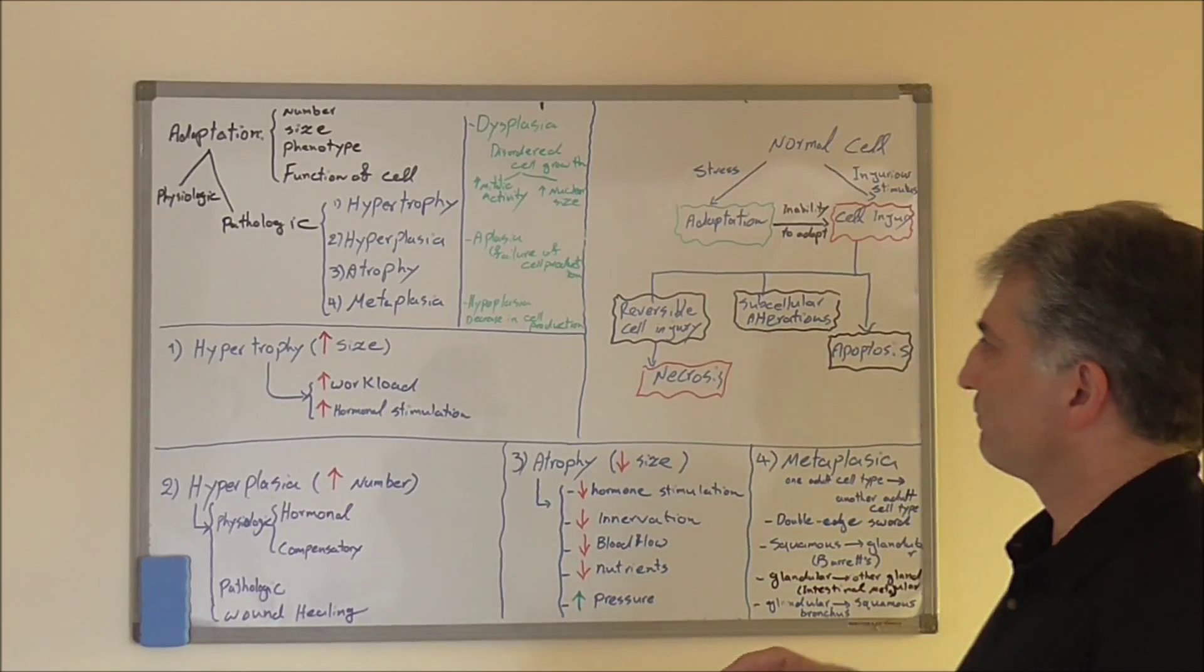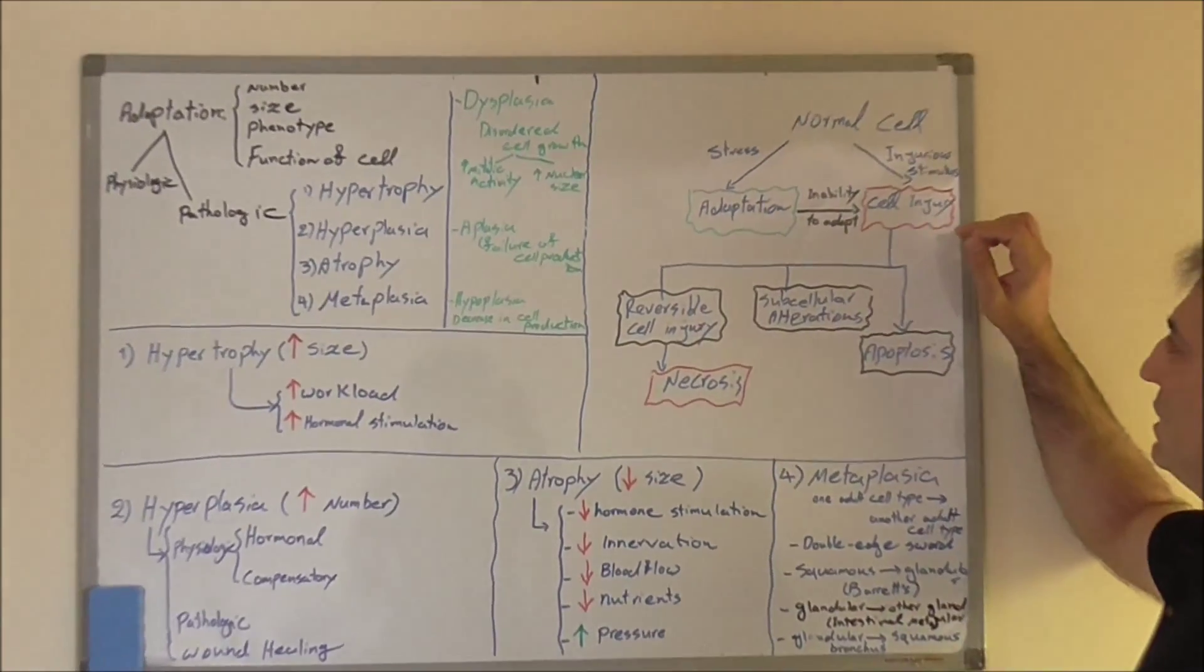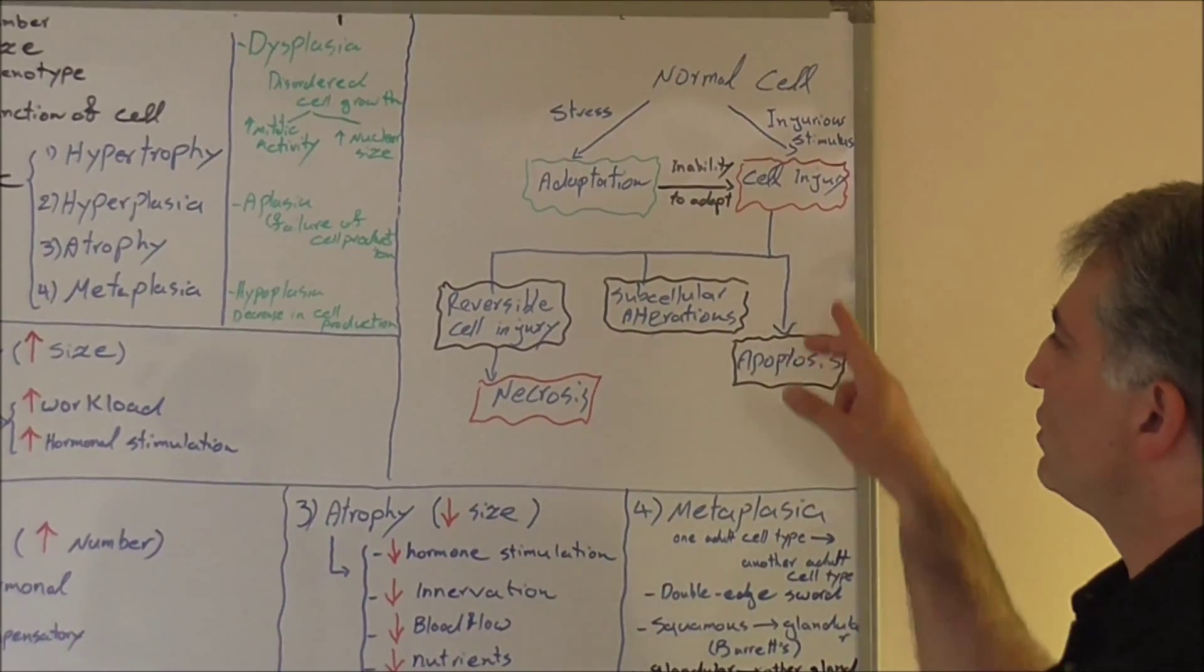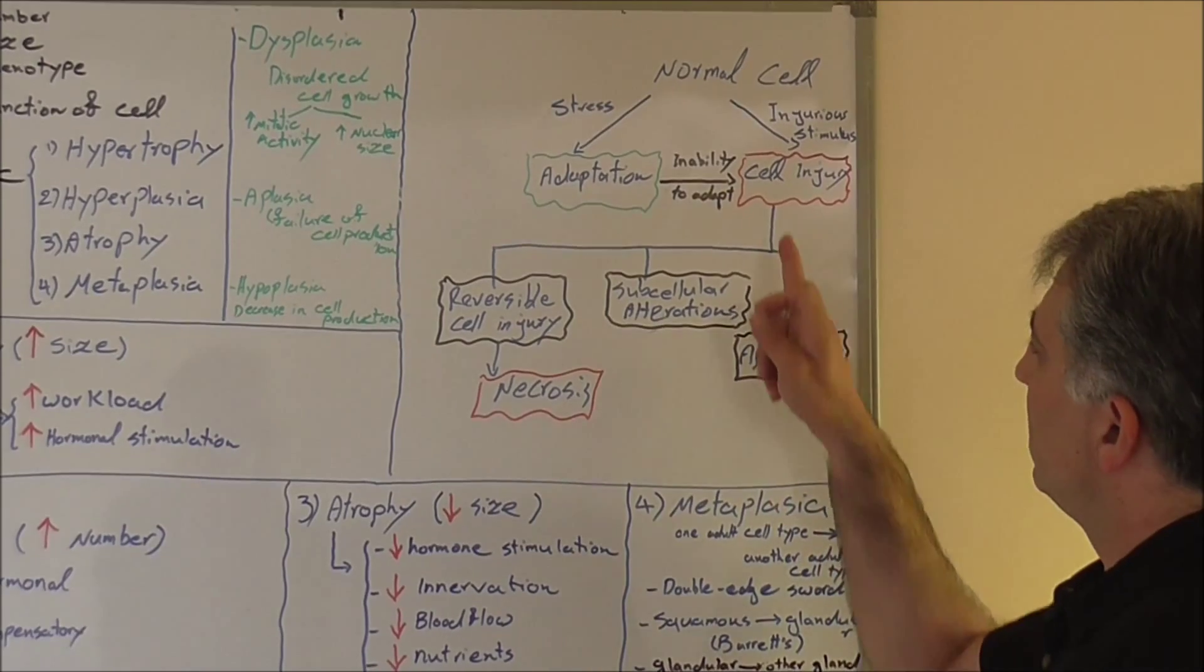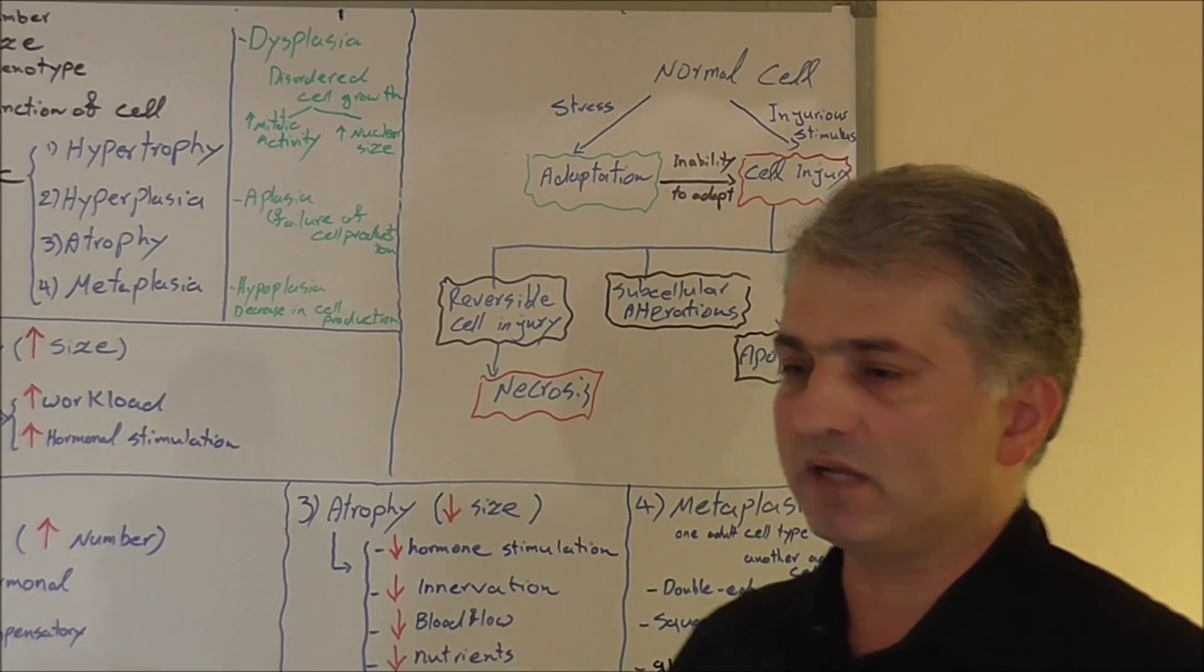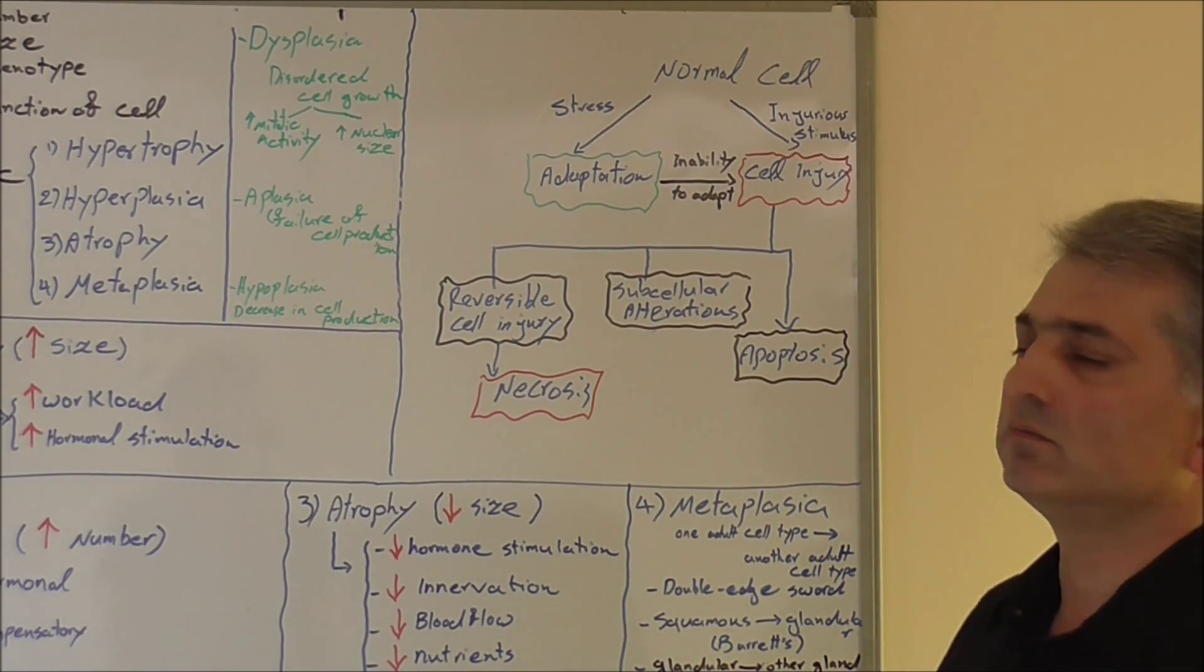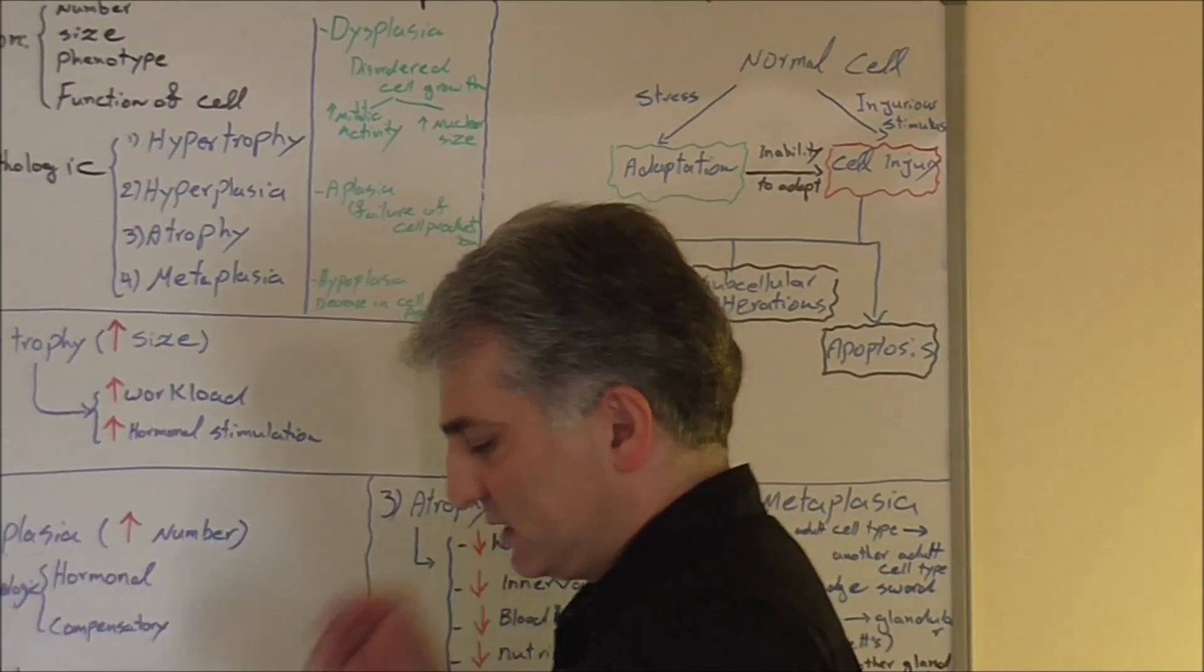Cell injury itself has different paths. It depends on what type of injury, how severe is the injury, what type of cell we have, and many other factors which I will discuss in the next few lectures. First, it's going to be apoptosis, or at the end it's going to be necrosis, where the cell is totally dead. What is the difference between apoptosis and necrosis? I will tell you in the next lecture.